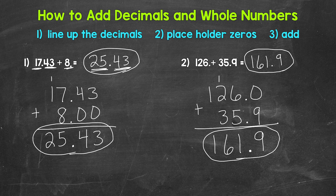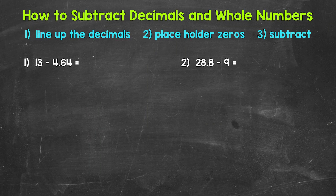So that's how to add decimals and whole numbers. Let's move on to subtraction. Whenever we have a subtraction problem involving a decimal and a whole number — either a decimal minus a whole number or a whole number minus a decimal — we use the same steps we use when subtracting two decimals: line up the decimals and use placeholder zeros if necessary.